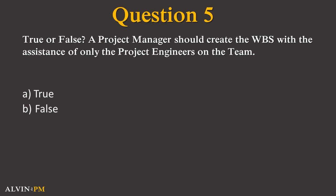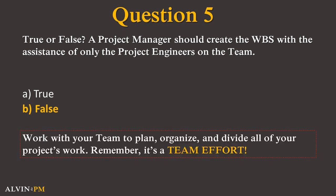Question 5. True or false: a project manager should create the WBS with the assistance of only the project engineers on the team. The correct answer is false. The project manager should work with the entire team and other stakeholders as needed to develop the work breakdown structure. To make sure that you cover the entire scope of the project, you want to work with all key members on your team to plan, organize, and divide all of the work from your project. Remember, the WBS is intended to cover 100% of your project scope. Anything outside the scope of your project will not be covered in your WBS.